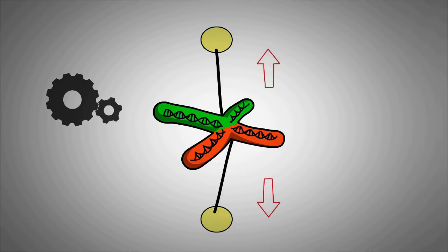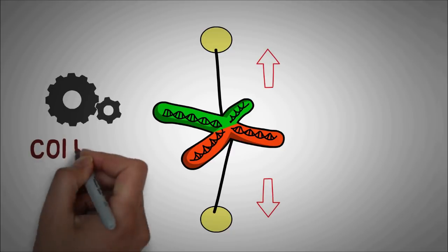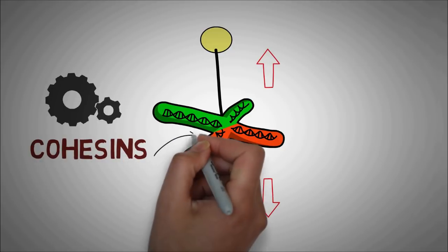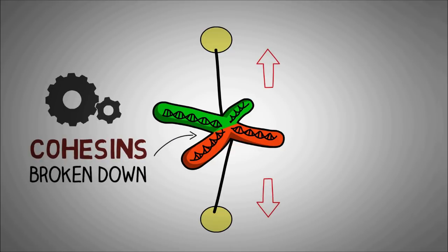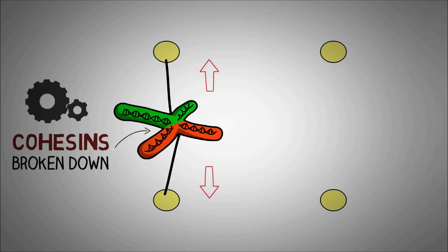This results in chromosomes being split in the center into two equal and new chromosomes.